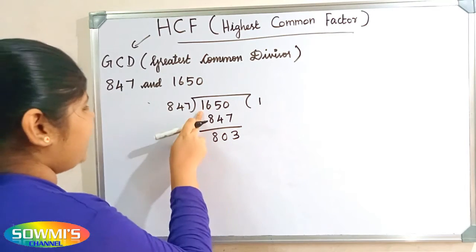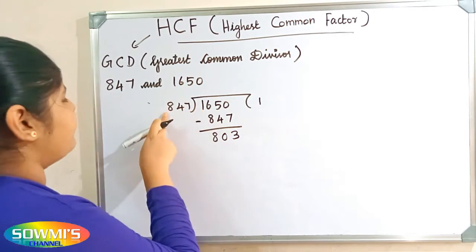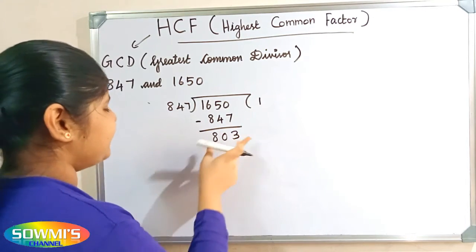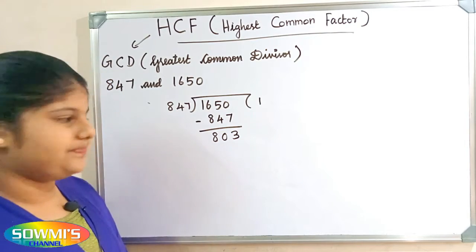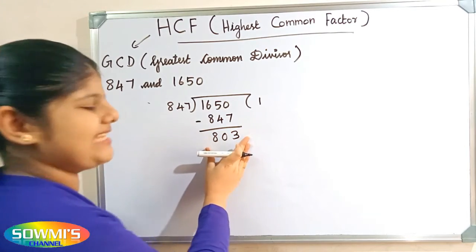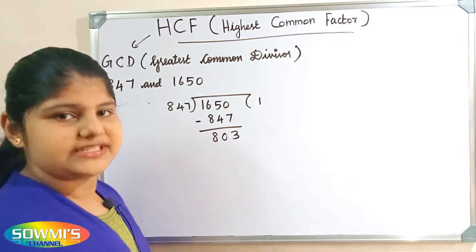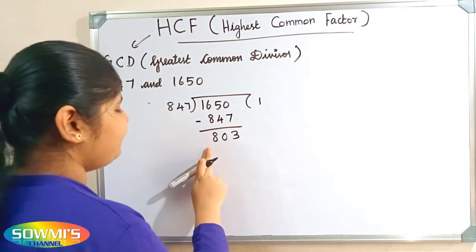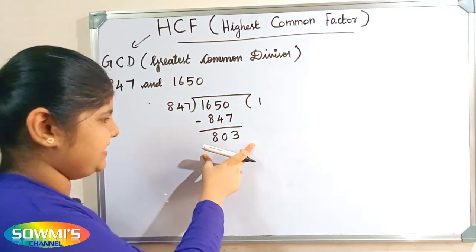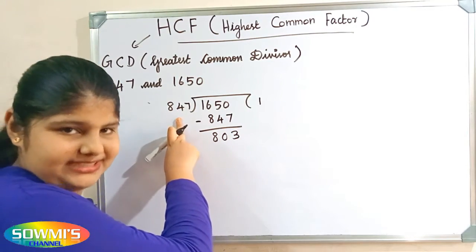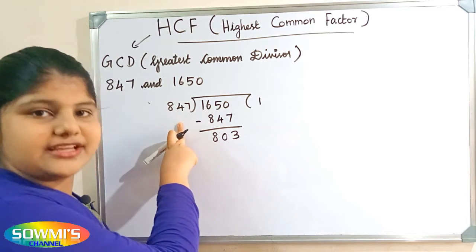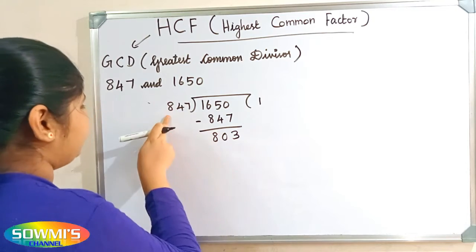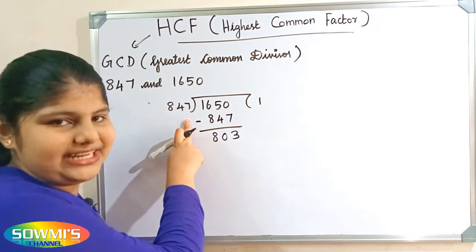When we divide 1650 by 847, our quotient will be 1 and our remainder will be 803. Now we have to repeat the process until our remainder is 0. We make the remainder the new divisor and the previous divisor the new dividend — so 803 becomes the new divisor and 847 becomes the new dividend.